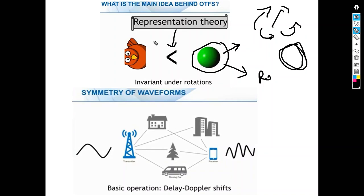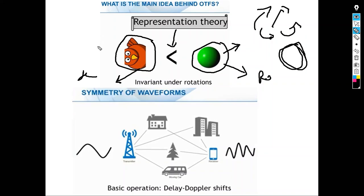On the other side, consider an asymmetric shape like a chicken. When you rotate it, the shape becomes different — it's no longer the same as the original. We call this rotation dependent. The symmetry is low. This concept is very general — symmetry and representation theory apply broadly. Here we gave an example in terms of geometry, but in communication we have waveforms and signals transmitted over the air.